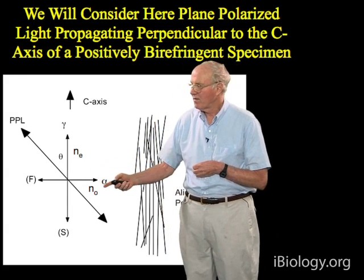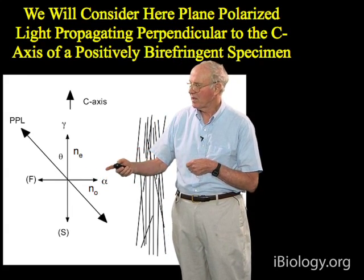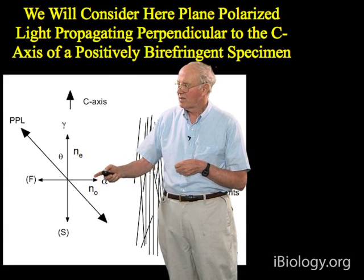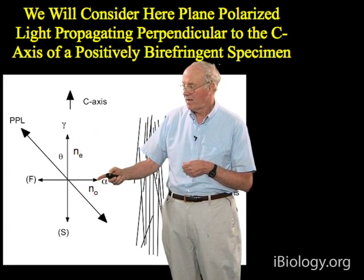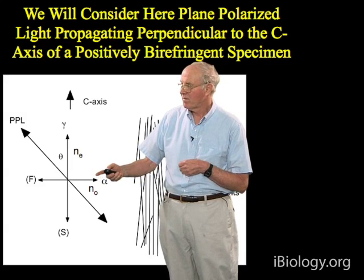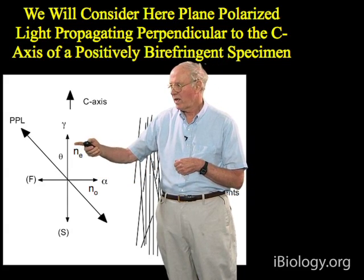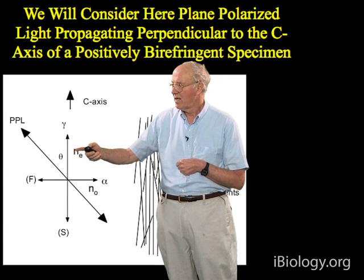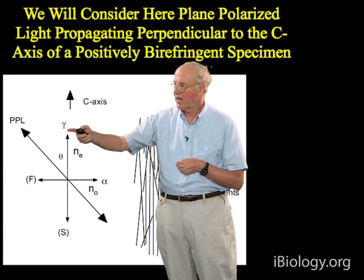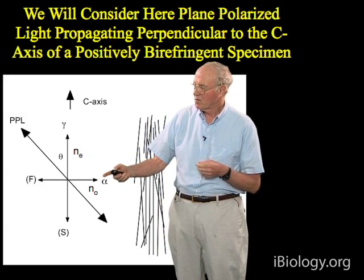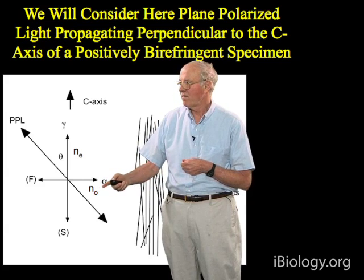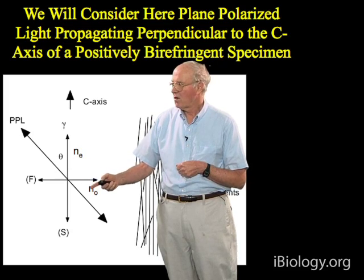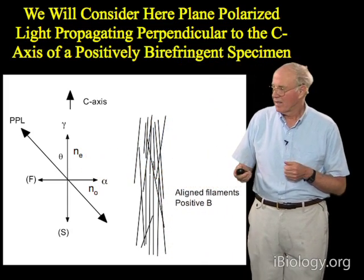Another convention in polarization microscopy: for some specimens you may not know exactly what n sub e and n sub o are, but you can figure out the vibration axes and determine which wave is the slow wave and which is the fast wave. The slow wave, which moves slowly through the birefringent material, has the larger refractive index and is called the gamma wave. The fast wave, with a smaller refractive index, is sometimes called the alpha wave.